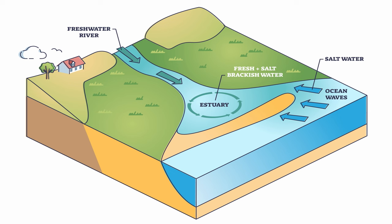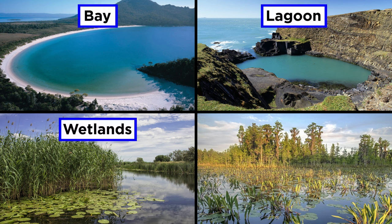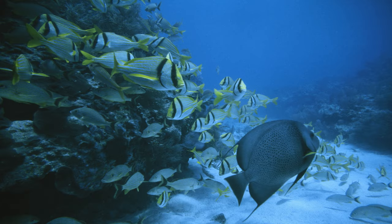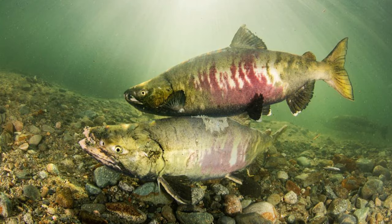Then there are estuaries, where salt water from the ocean mixes with fresh water from the land. You may also know estuaries as bays, lagoons, wetlands, and swamps. These ecosystems are adapted to cope with the challenge of the rise and fall of tides, as well as variations in water chemistry, primarily salinity. Despite this, estuaries are one of the most productive ecosystems on earth, home to fish, shellfish, crustaceans, algae, plankton, and mangrove trees. Numerous animals rely on estuaries for nesting and breeding grounds.